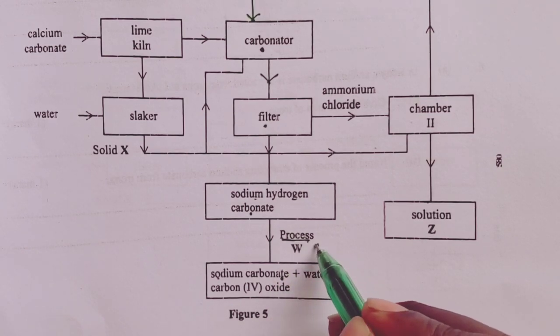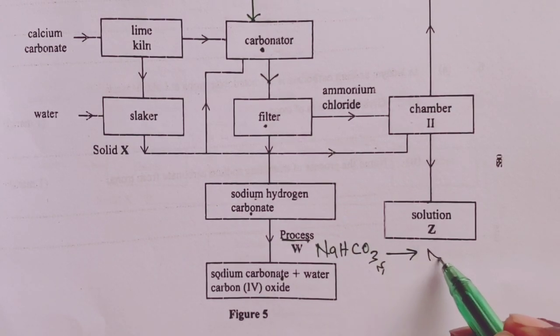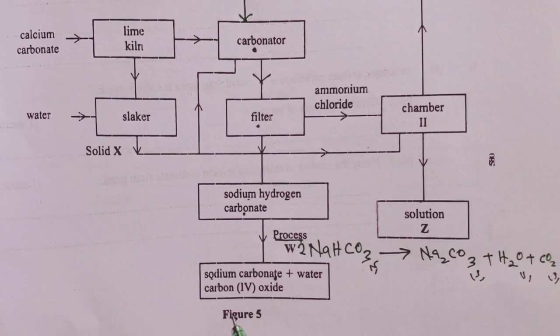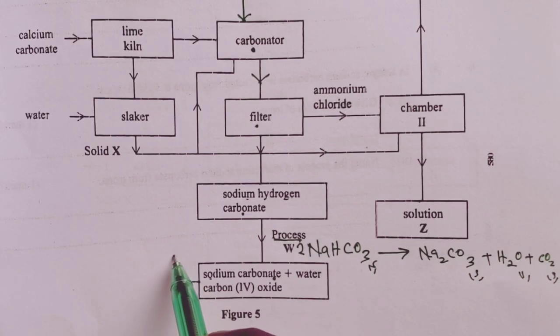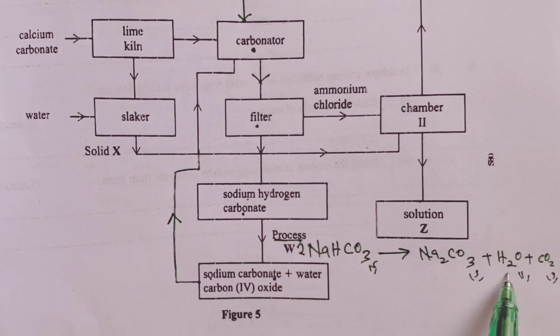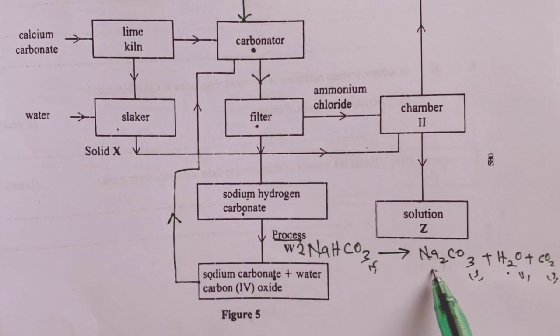Of course, the equation would be sodium hydrogen carbonate in solid being heated to give sodium carbonate, to give water, and to give carbon 4 oxide. We balance with that two on sodium hydrogen carbonate. That represents the reaction taking place in process W. Now, this carbon 4 oxide would be recycled back to the carbonator through this arrow.